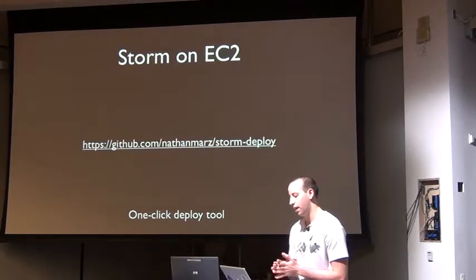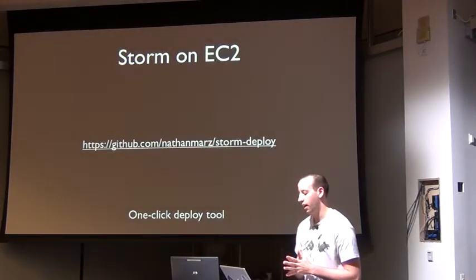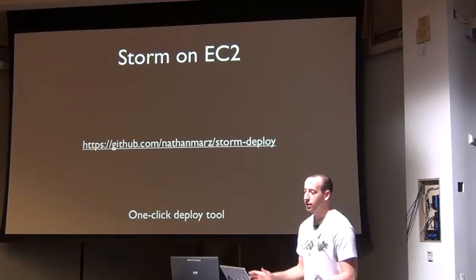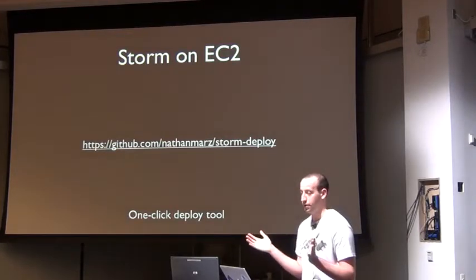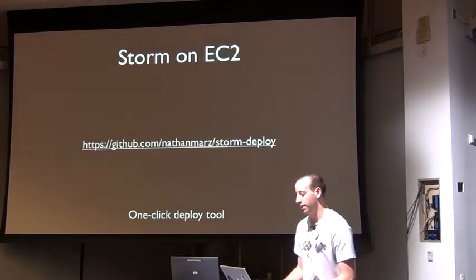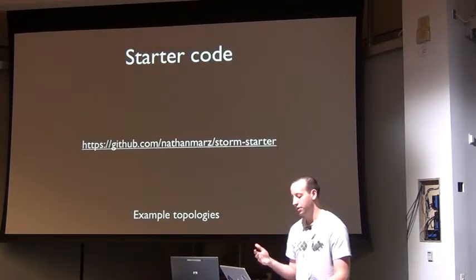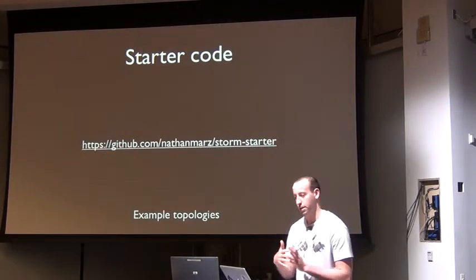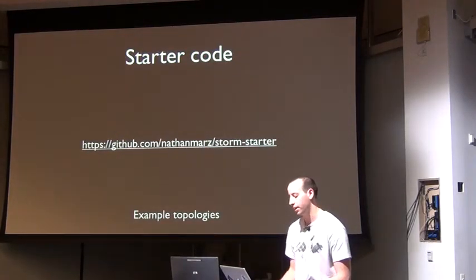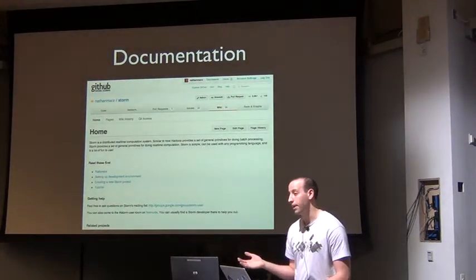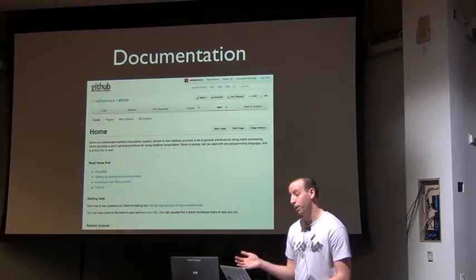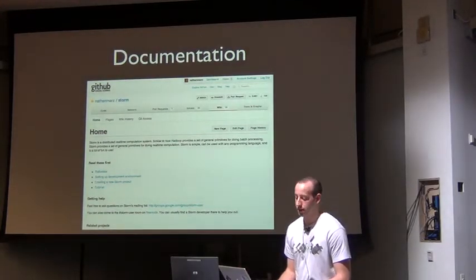For those of you on EC2, there's a companion project called Storm Deploy — a one-click deploy tool that lets you have a fully configured Storm cluster in about 10 minutes. All the code shown in this presentation is in the Storm Starter project, which contains example topologies to help you get started quickly. Storm also has about 20,000 words of documentation on the Storm Wiki, and the community feedback on that has been really good.